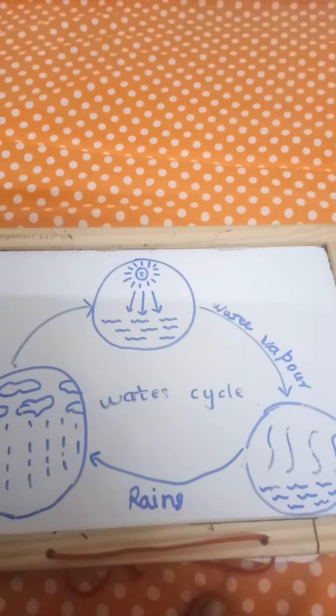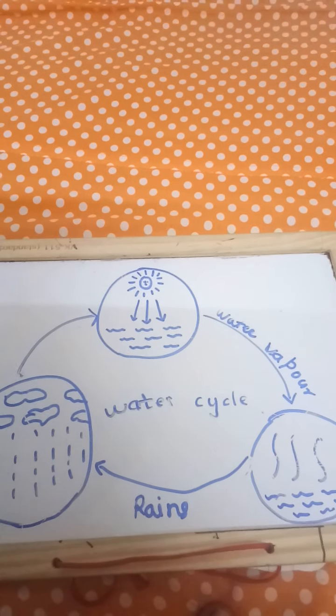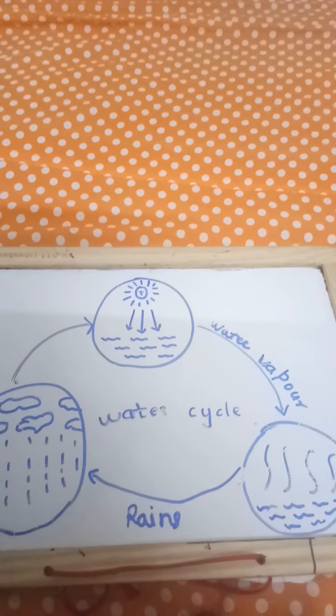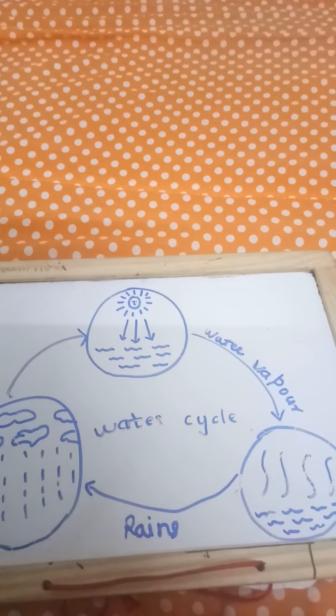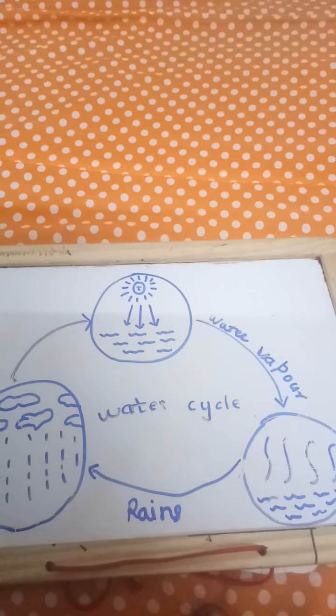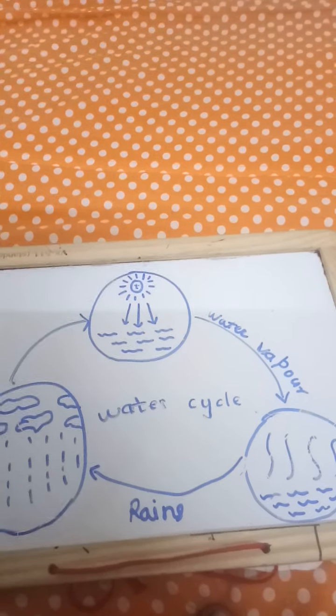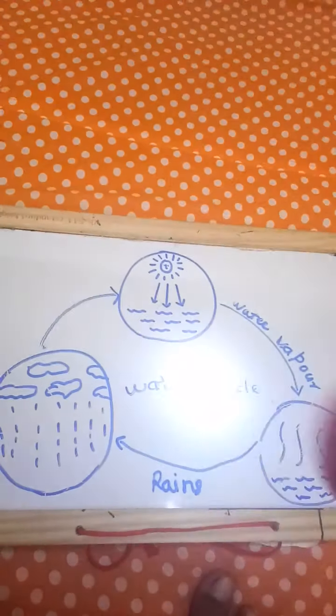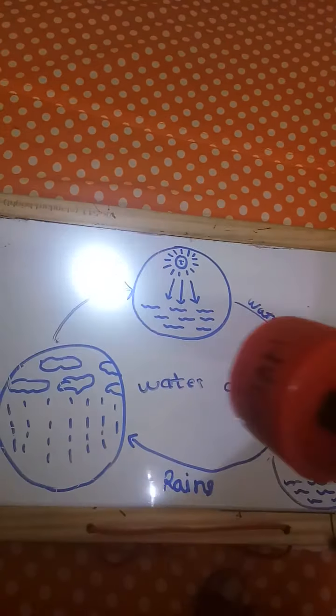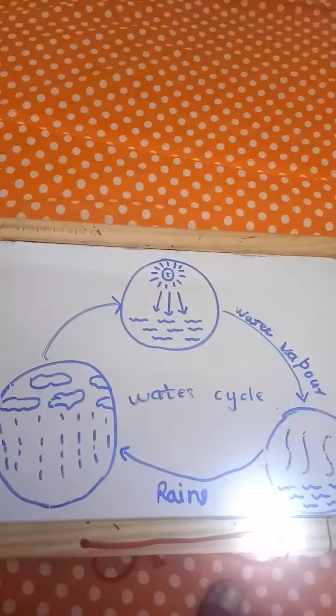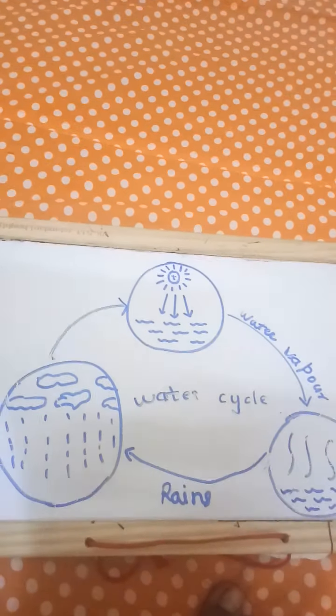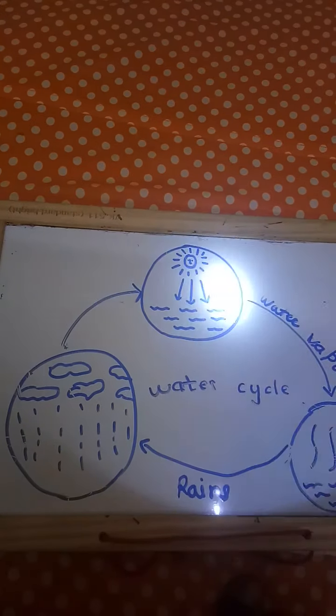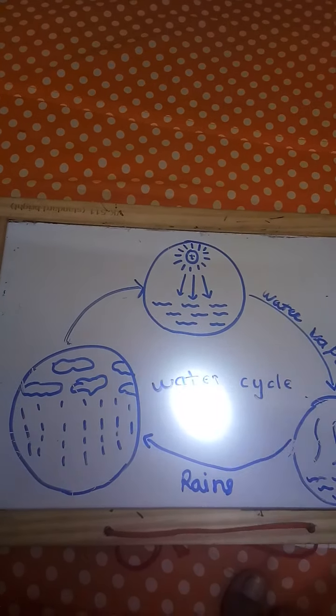Do you know, in our India there are three main seasons: first summer season, then rainy season, and then winter season comes. Within these three seasons, this process is completed. When this process completes one time, then also second time this process happens again and again. It is called as revolution.